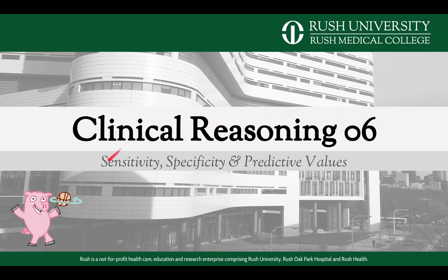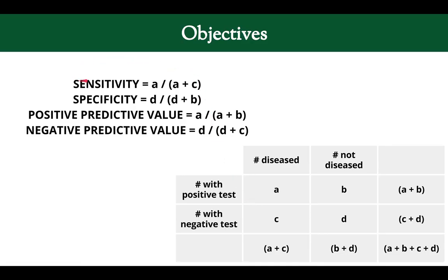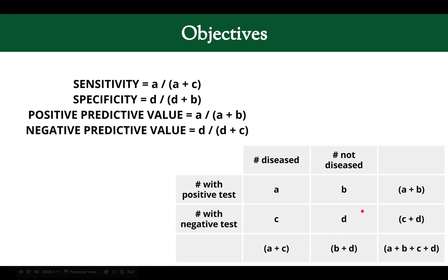Welcome to the sixth video on clinical reasoning. This one is about sensitivity, specificity, and predictive values. Here is the framework that we use for clinical reasoning, and these things fall in this box here — it's going to help us with understanding tests and understanding the pre-test and post-test probability. The objectives are to know the definitions for sensitivity, specificity, positive predictive value, and negative predictive value — to know them intuitively but also to know how to calculate them. In a subsequent video, we're going to talk about how to apply this to a patient.